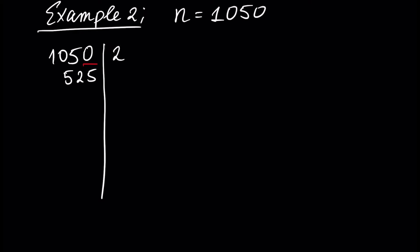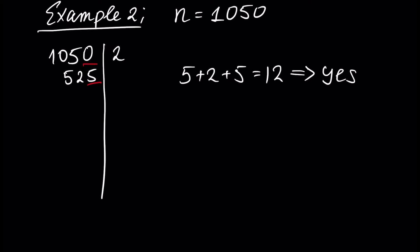525 is not divisible by 2, because the last digit is not even or 0. Is this number divisible by 3, the next prime number? Using the divisibility criterion for 3, we check whether the sum of the digits — 5 + 2 + 5 — is divisible by 3. This is 12, and 12 is divisible by 3, so the answer is yes. Therefore 525 is divisible by 3 and the result is 175.